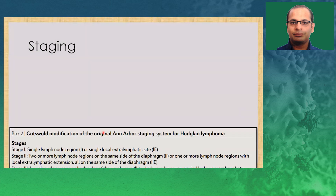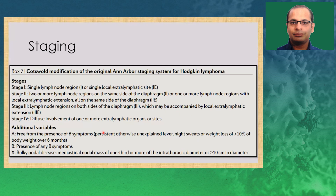Staging is by the classical Ann Arbor staging and some modifications. Stage 1 is a single lymph node or single extralymphatic site. Stage 2 is two or more lymph node sites on the same side of the diaphragm or one or more lymph nodes with local extralymphatic extension, same side of diaphragm. Stage 3 is when both sides of the diaphragm are involved, and stage 4 is when there is diffuse involvement or two or more extralymphatic organs are involved. B symptoms are unexplained fever, night sweats, or weight loss of more than 10% over six months. Bulky disease is more than 10 centimeters in the largest node or a mediastinal mass covering more than one-third of the intrathoracic diameter.